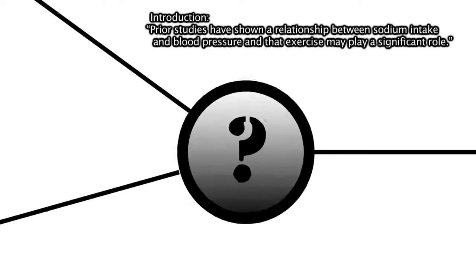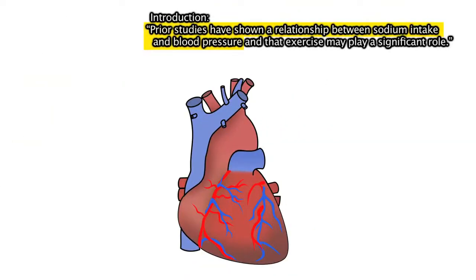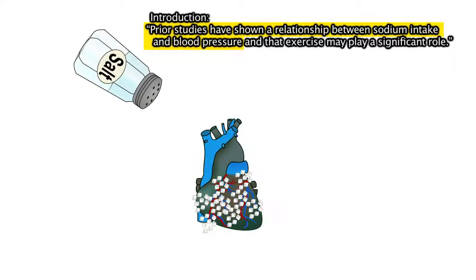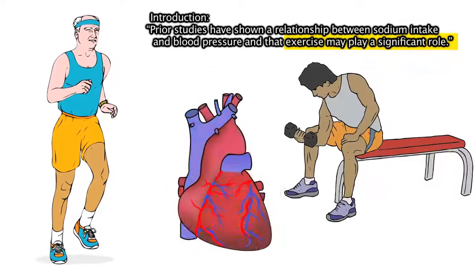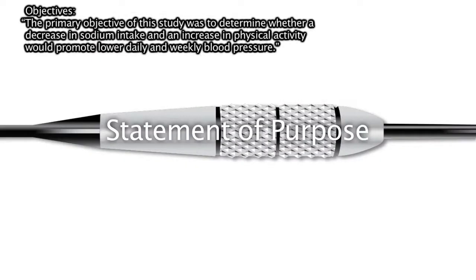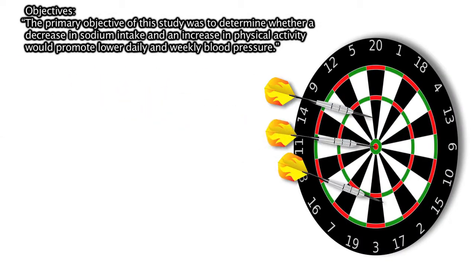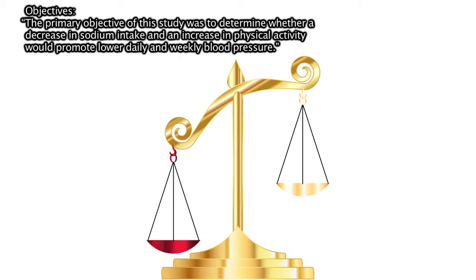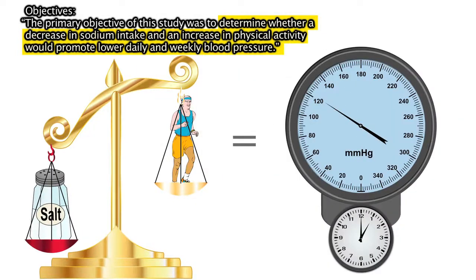First we provide some context for our question. We point out that previous investigations have revealed a link between sodium intake and blood pressure, and we mention that exercise is likely to be an important factor. Next we state the purpose of the study. Your statement of purpose will often be a terse description of what you wanted to achieve. In this case, our main objective was to ascertain whether decreased sodium and increased exercise would facilitate lower blood pressure over time.